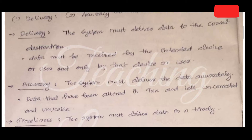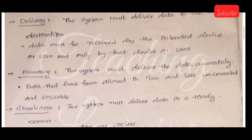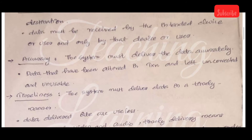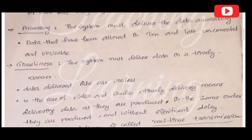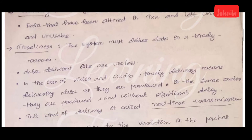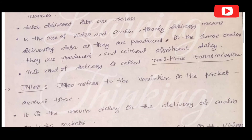The second characteristic is accuracy — the system must deliver the data accurately. Data that has been altered in transmission and left uncorrected becomes unusable. The third is timeliness — the system must deliver data in a timely manner. Data delivered late is useless, especially for video and audio. Timely delivery means delivering data as it is produced, in the same order, without significant delay. This is also called real-time transmission.